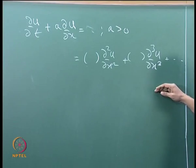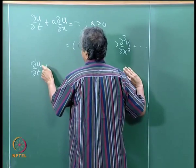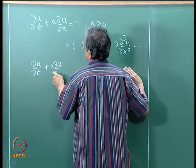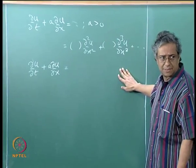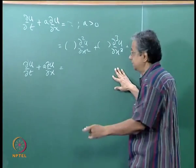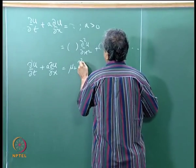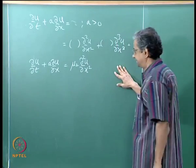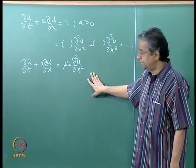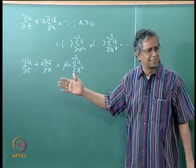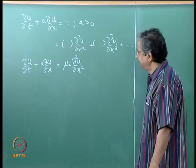So we then asked the question: since the equations are linear, why not deliberately add a term on the right-hand side which has ∂²u/∂x², with mu_2 as a constant? Very suggestively I have called it mu_2. Clearly I am going to have a mu_3 and a mu_4.